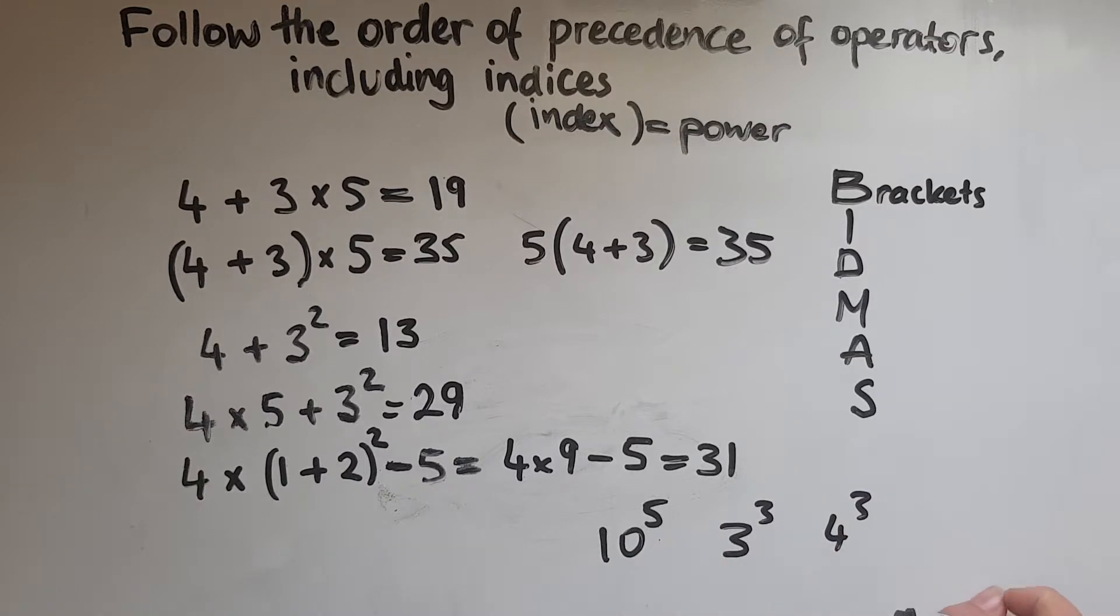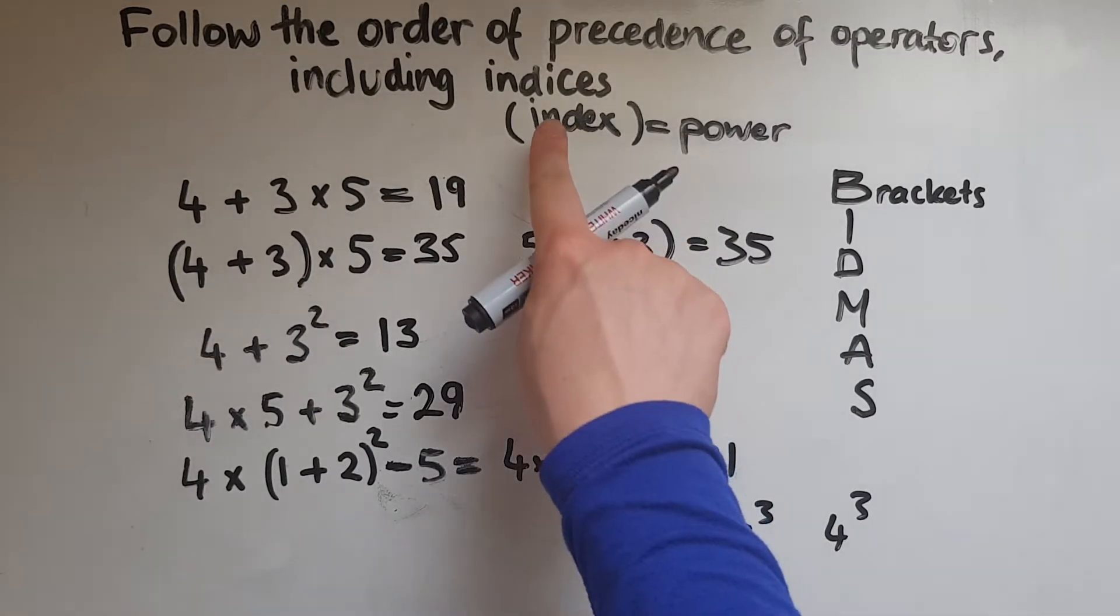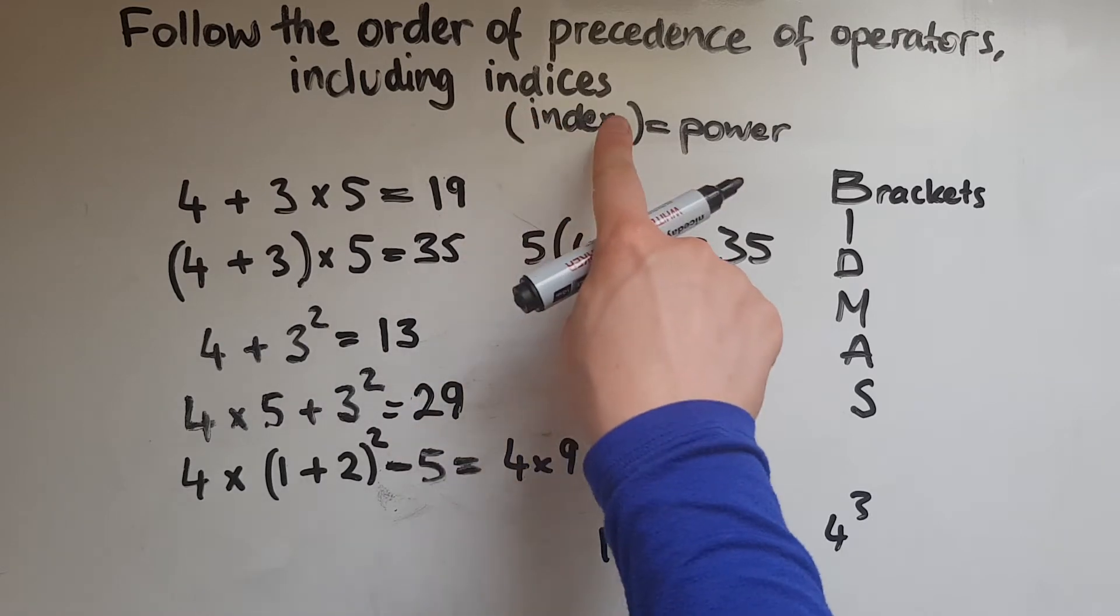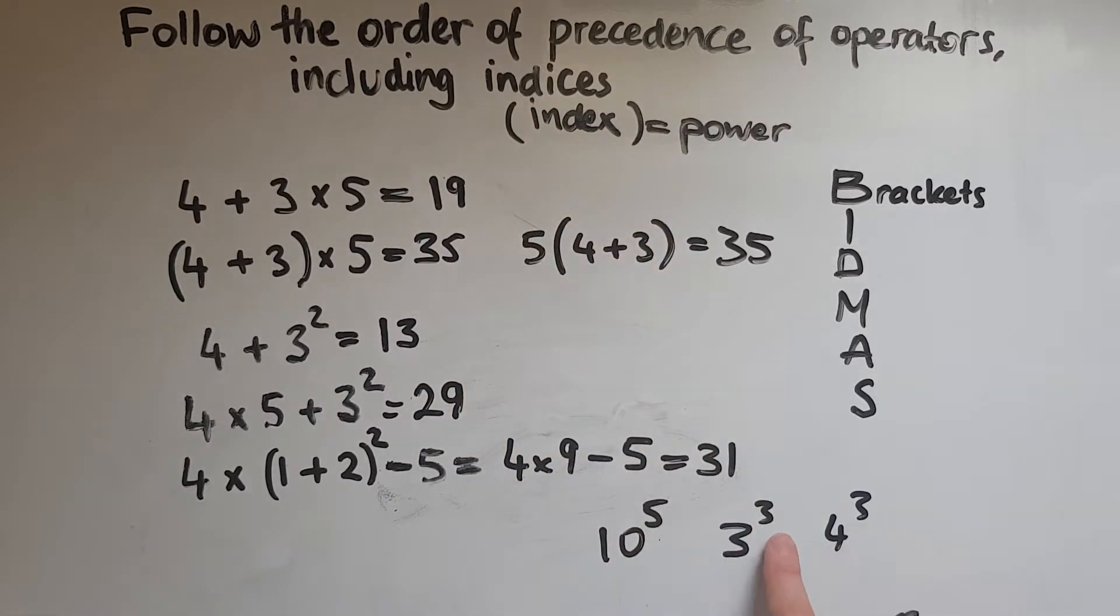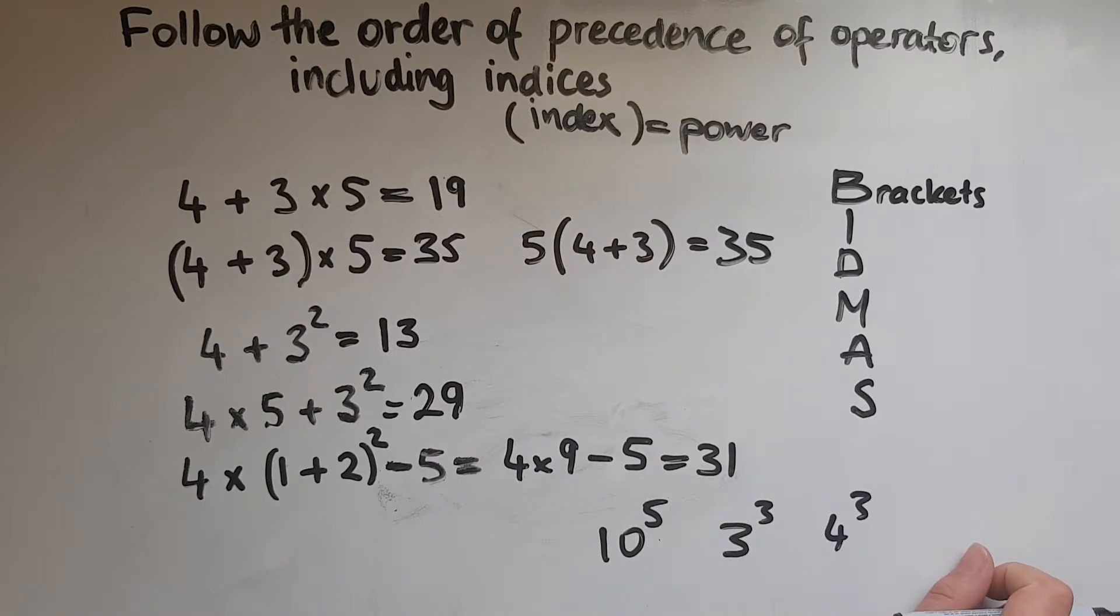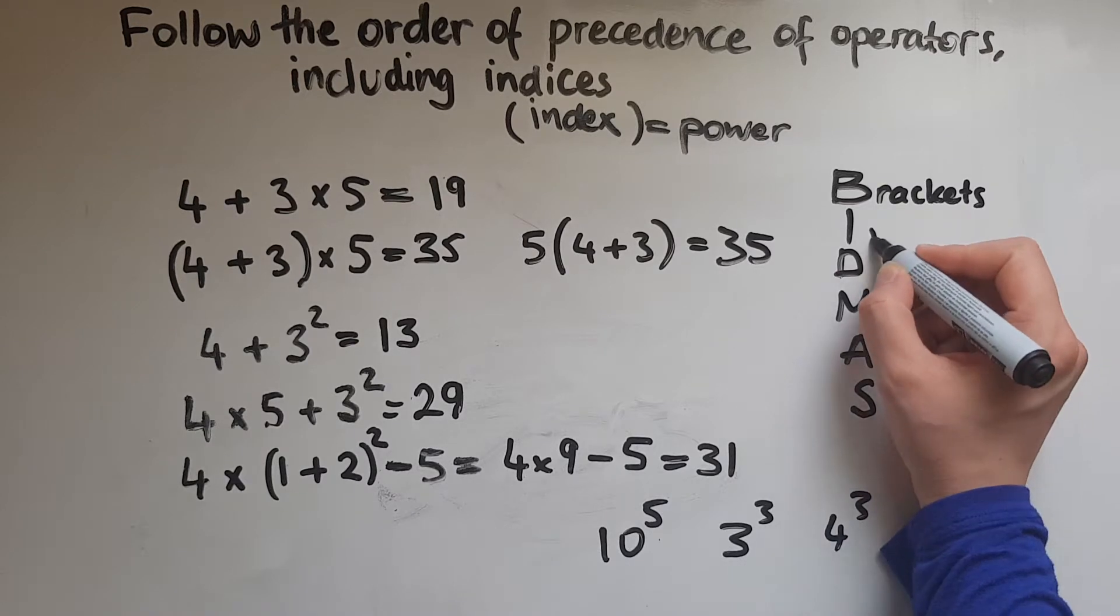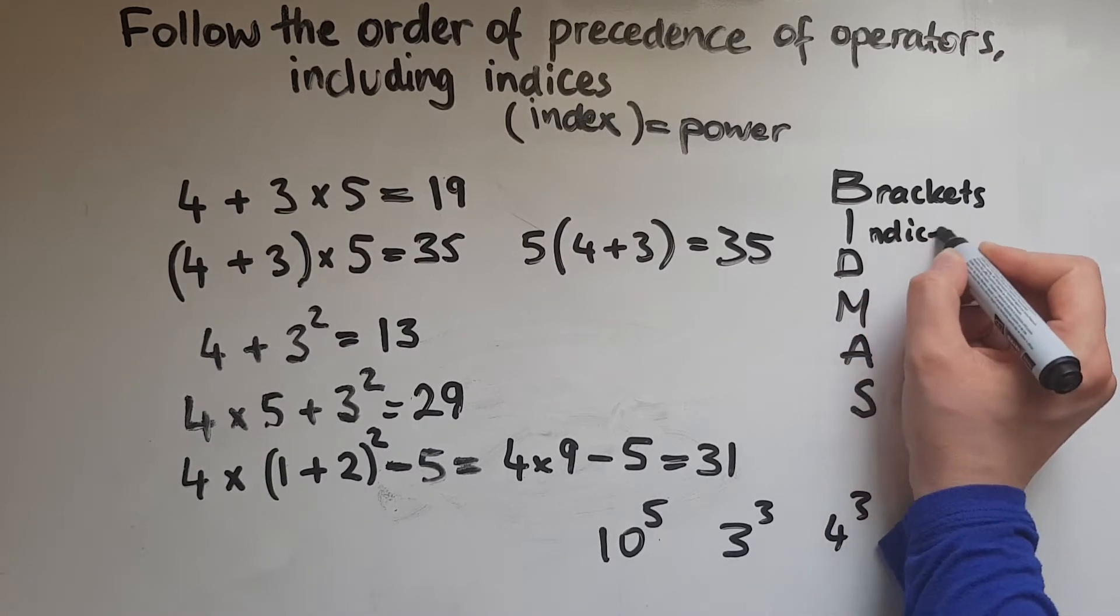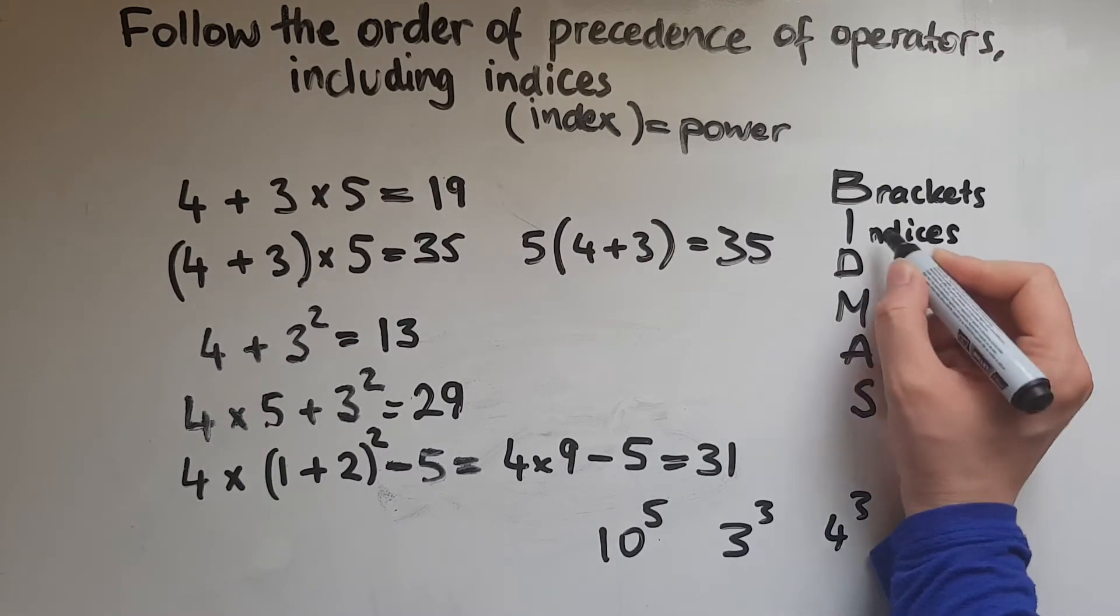The power at the top, squared, cube, to the power of 4, to the power of 10. So what we call these or another name for them is indices. One is index, two or more indices. That's the plural form of it. It means powers.